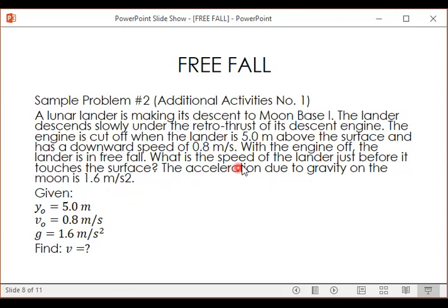So what are our given values? We have the height: 5 meters. This is the initial height because here is where the lunar lander starts to freefall, 5 meters above the surface.